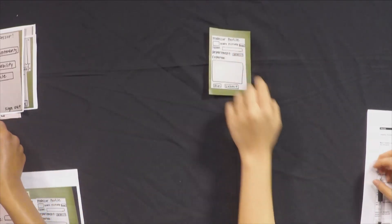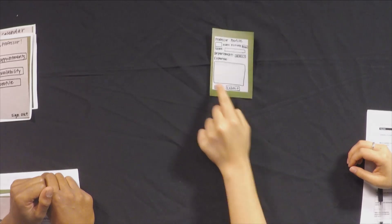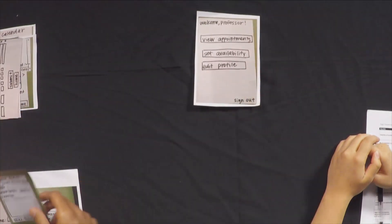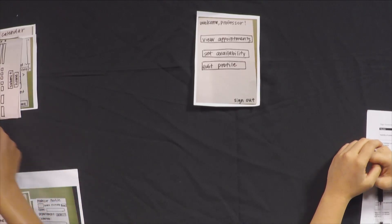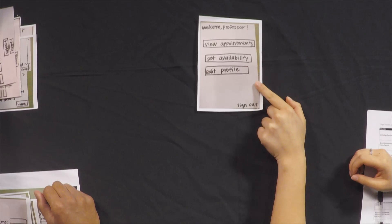I'll fill out my name and then I don't want to set up my profile so I'll just click skip. Here's the home screen. It looks like I can view appointments, set availability or edit my profile.